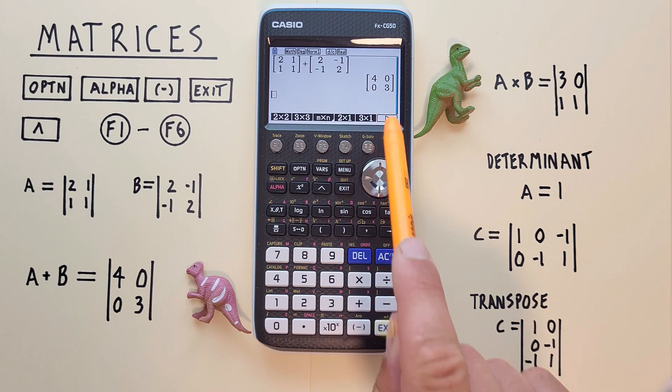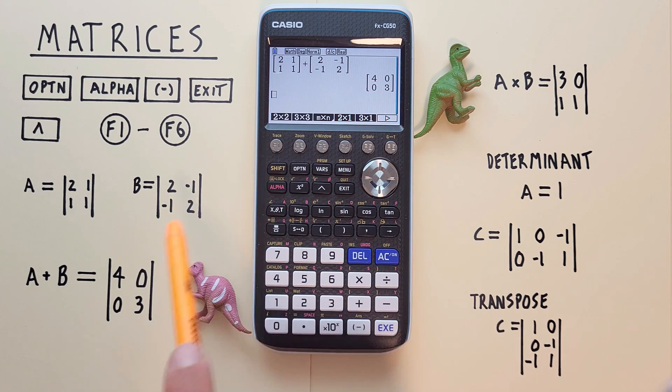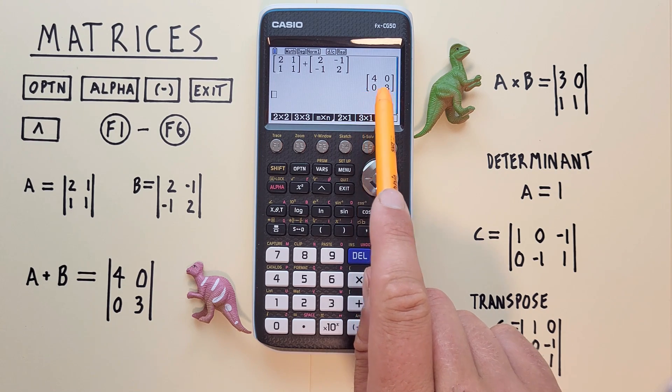And we solve it and we see we get a 2×2 matrix for A plus B which is [4 0; 0 3] which is correct.